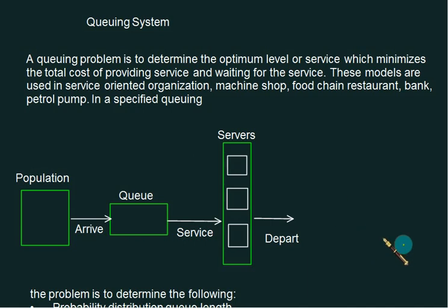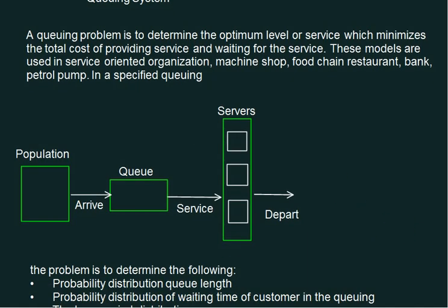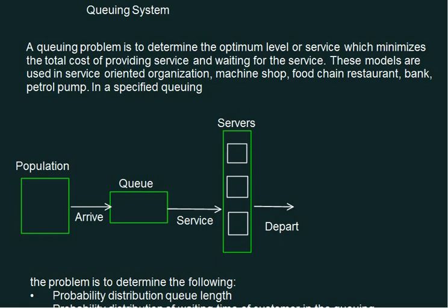In this video we are going to start the queuing system or the waiting line problems. In a number of situations we will find the queue is formed. It is very common in the case of machine shop, food chain, restaurant, bank, petrol pumps.